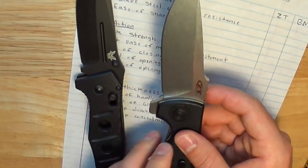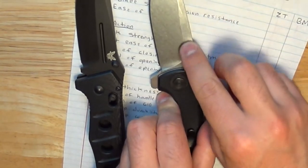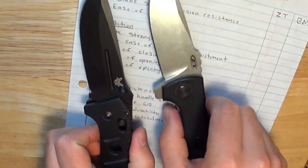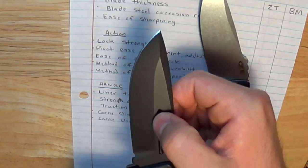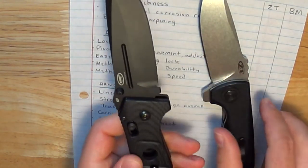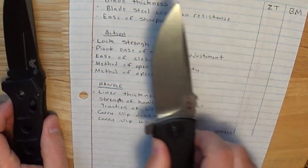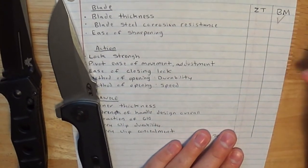They both have a similar grind, too, where you have this little flat, and this little flat, although Benchmade is, in my opinion, more stylish with that fuller that Shane Siebert likes to put in his knives. So, for blade thickness, that's going to go to Benchmade.